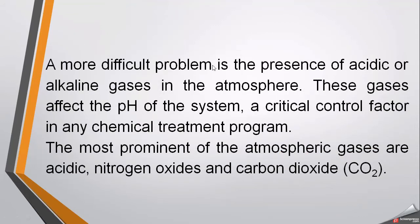A more difficult problem is the presence of acidic or alkaline gases in the atmosphere. Sometimes these gases are present around the plant and they affect the pH of the system — a critical control factor in any chemical treatment program. The most prominent atmospheric gases are acidic, like nitrogen oxides and carbon dioxide. Whenever these gases dissolve into the water, they make the water acidic and this leads to corrosion in the system.